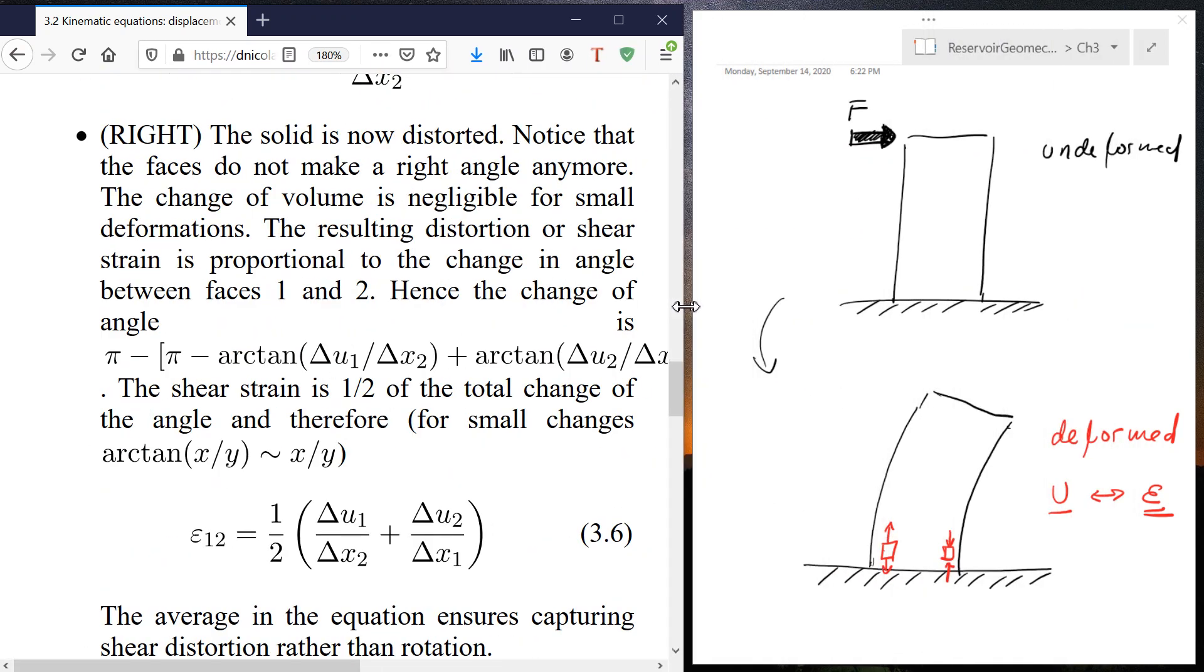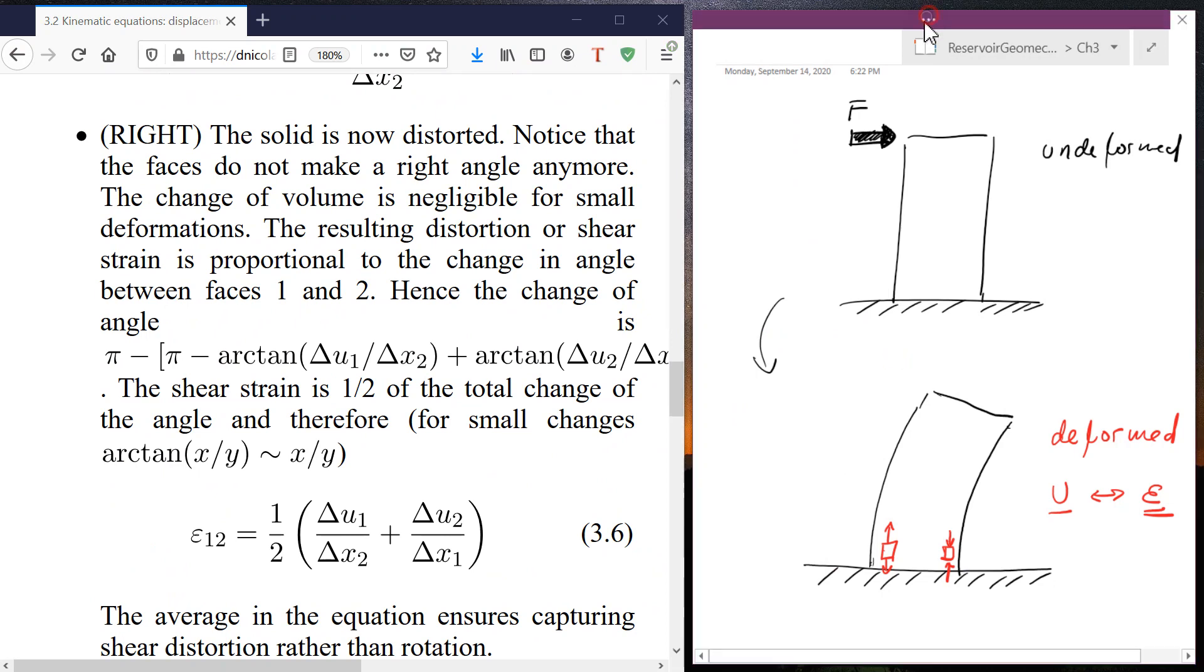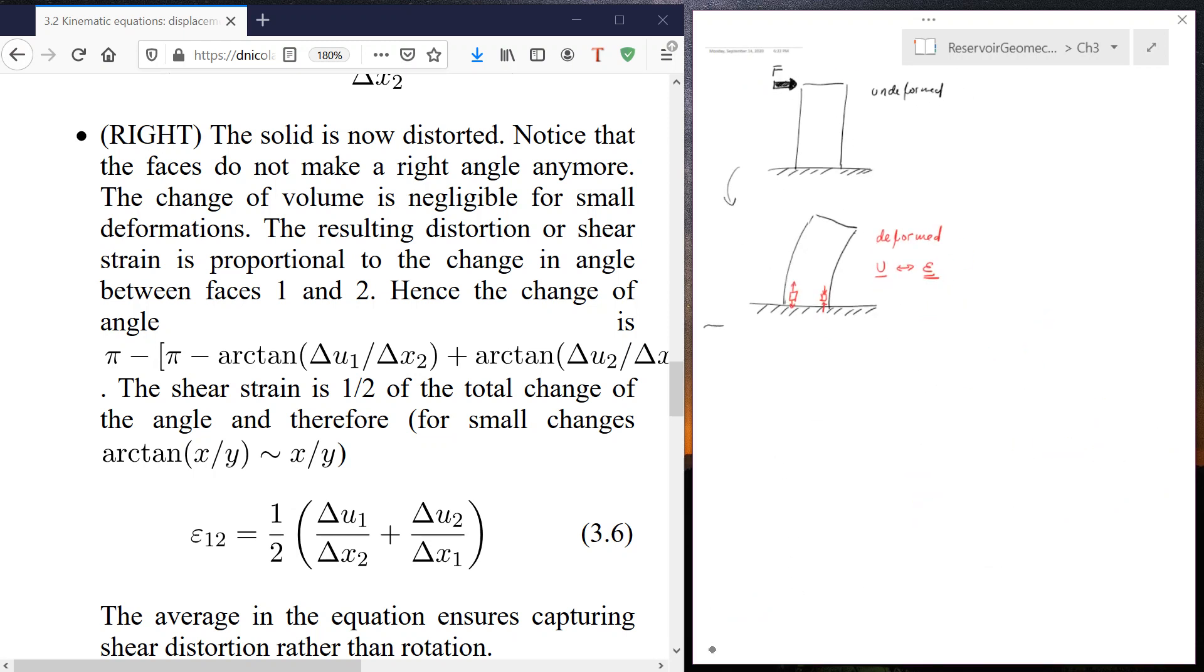So in general, in three dimensions, we're going to have that the strain tensor is going to be composed by, similarly to the stress tensor, a matrix. And this matrix is going to be equal to epsilon 11, epsilon 22, epsilon 33 in the diagonal elements.